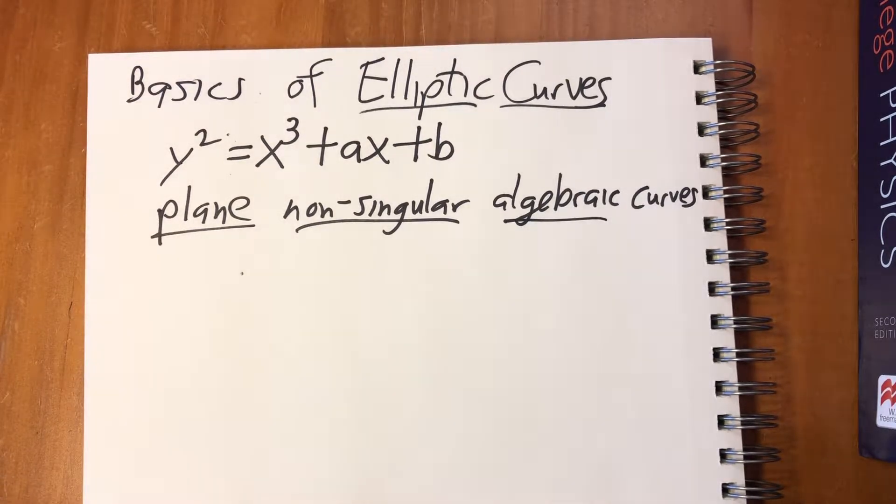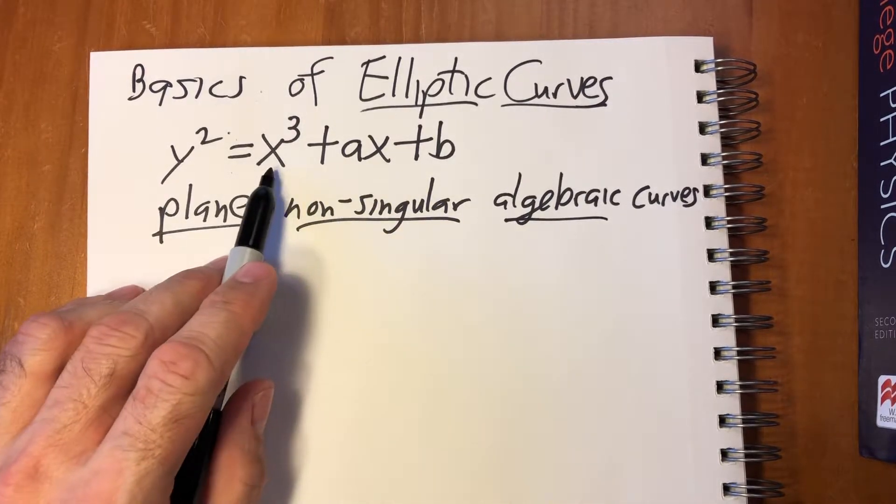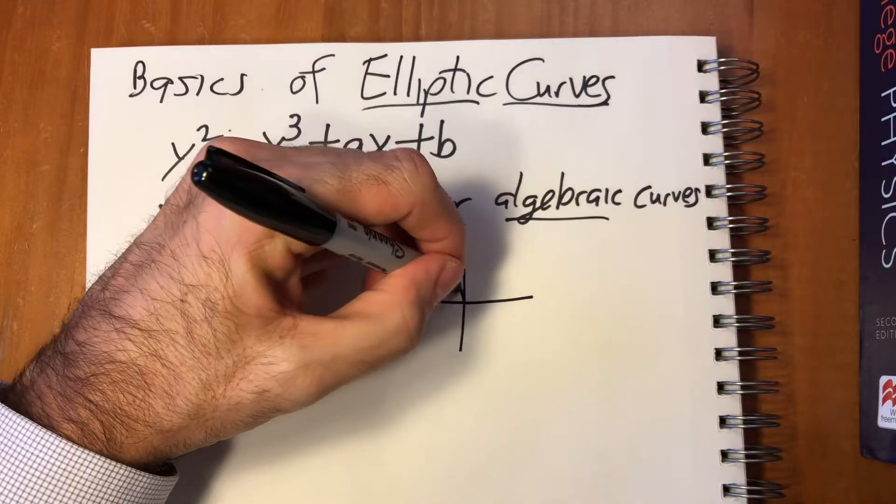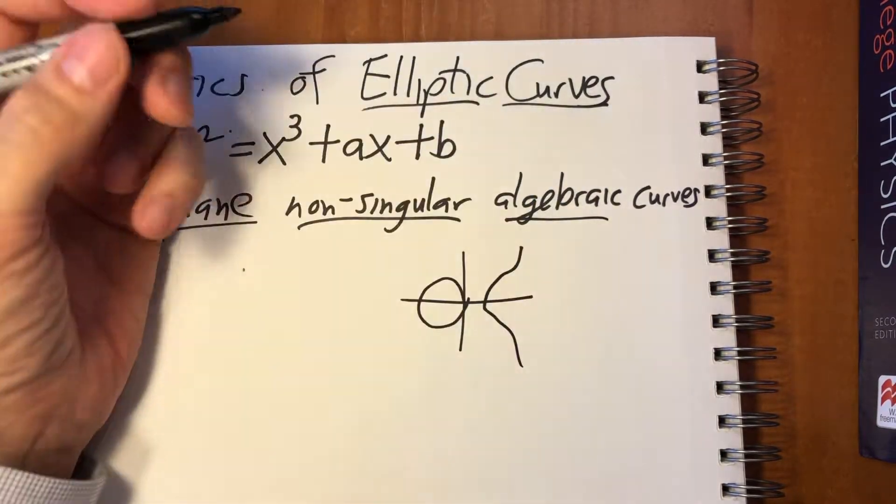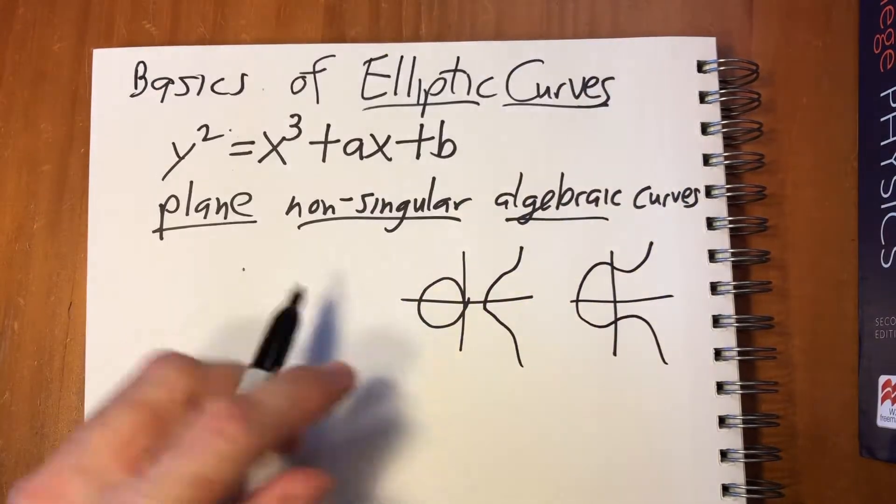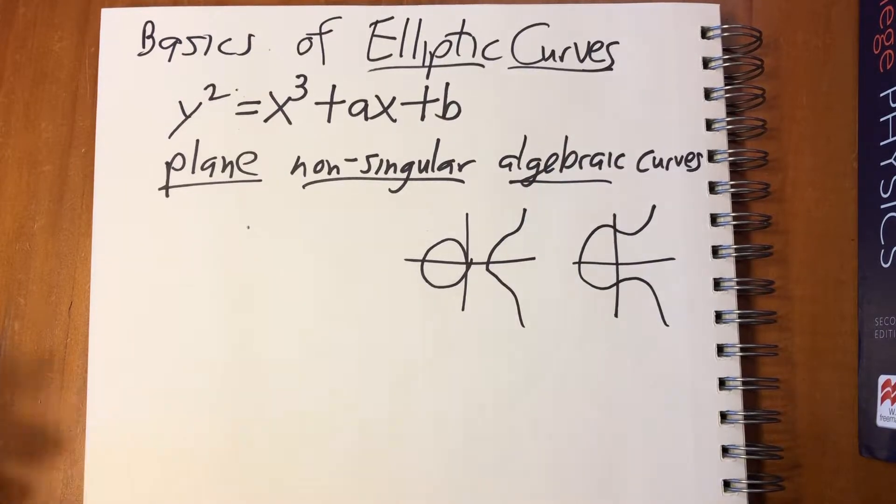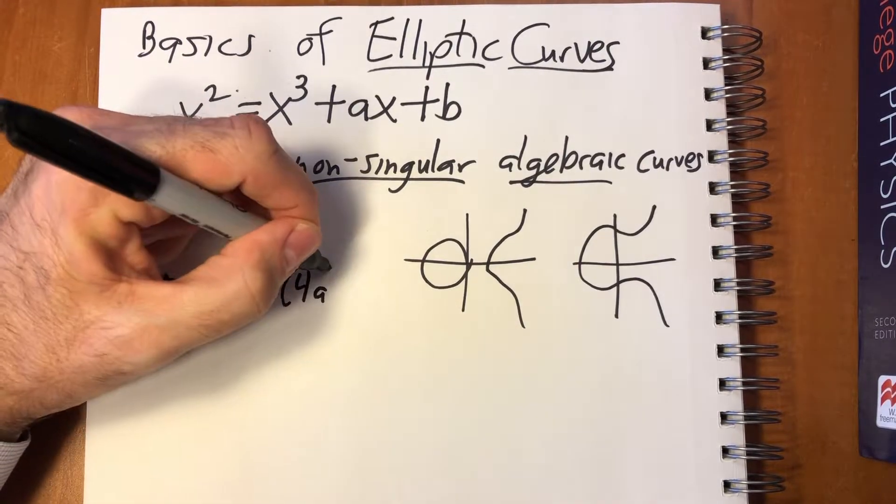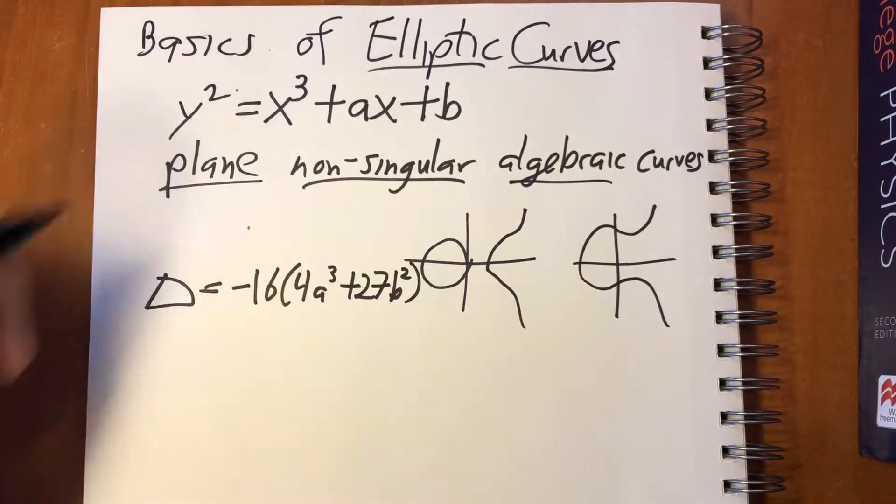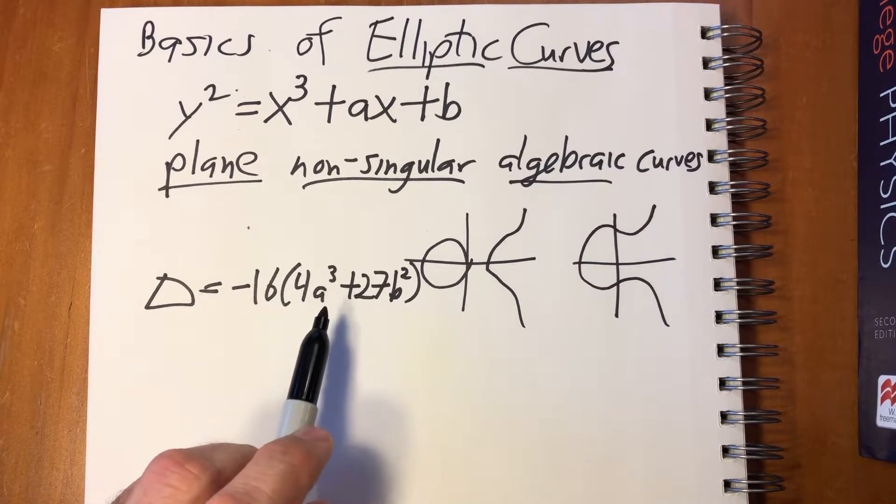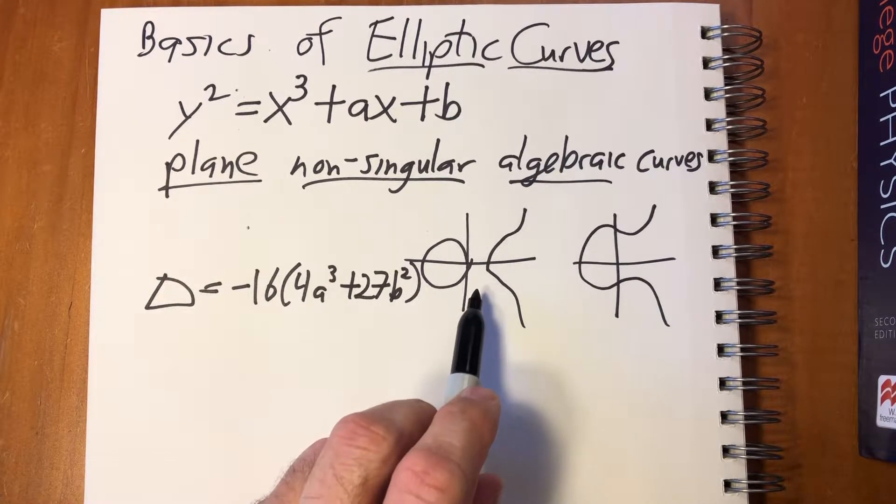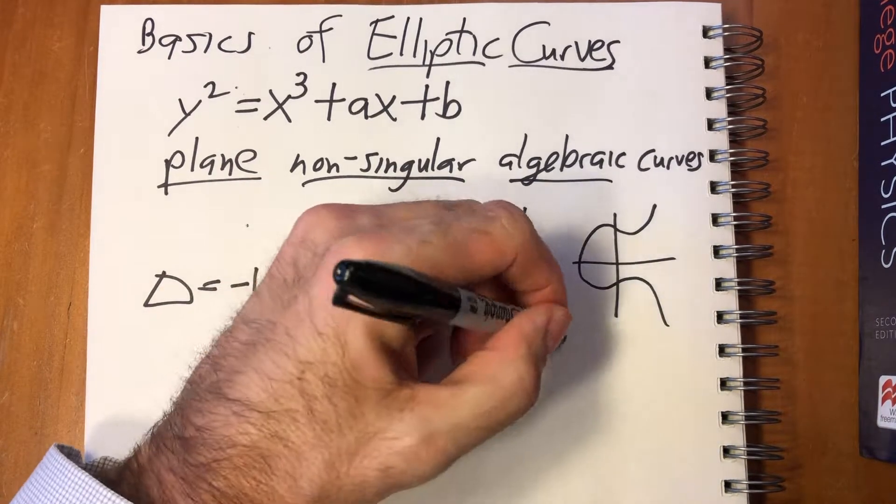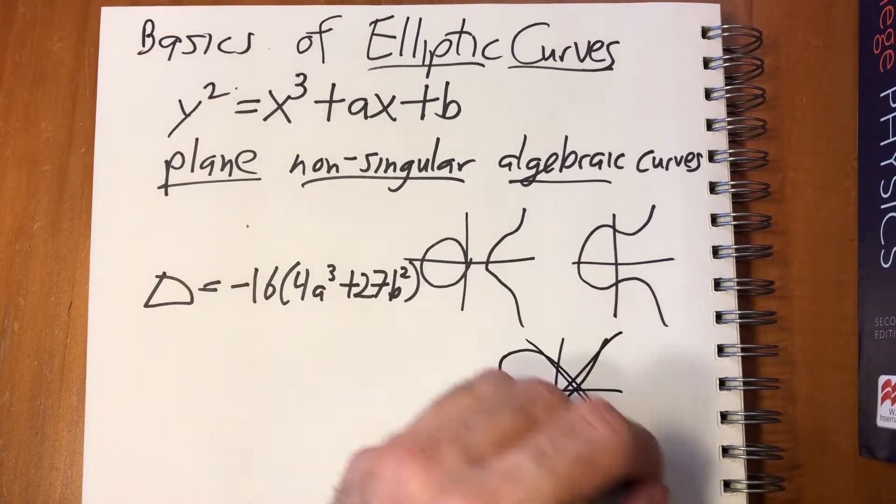Elliptic curves can have one of two forms. What determines which of those it looks like is there's actually a discriminant for elliptic curves. It's -16(4a³ + 27b²). So if this is positive, then the elliptic curve is going to have two pieces. If this is negative, it's going to have one piece. And if this is zero, then it will cross somewhere and it's actually not an elliptic curve.